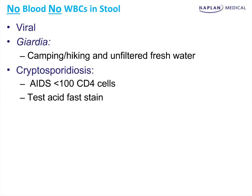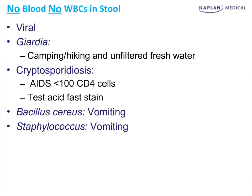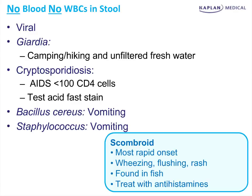Bacillus cereus is associated with vomiting, never has blood, never has fever. Staphylococcus is the same thing — these preformed toxins are associated with a mild, self-limited form of vomiting and diarrhea. Scombroid is a histamine fish poisoning; it's very rapid in onset and associated with wheezing, flushing, and rash. It's found in fish, treated with antihistamines, and can happen 10 to 20 minutes after you eat it.